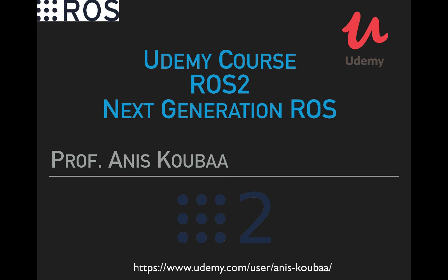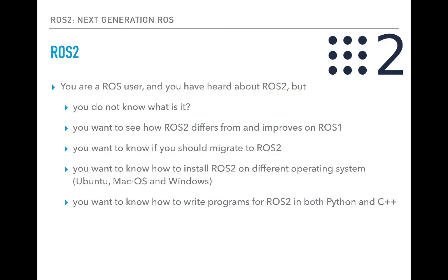Welcome to the course on ROS2, the next generation robot operating system. Are you a ROS2 user, and have you heard about ROS2 as being the next generation ROS, but are still unsure what ROS2 is and how it improves or differs from ROS1? Is it really time to migrate to ROS2? Is it easy to install ROS2 and get it up and running? How to create a workspace, a package, and how to write programs with ROS2?